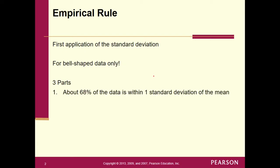It has three parts. Here's the first part: about 68% of the data is within one standard deviation of the mean. I said 'about' — so it's roughly 68%, not exactly. The more important thing is that it says 'within one standard deviation.' What does 'within one' mean? Does that mean less than, greater than, or either way? Hopefully you said either way — both less than and greater than.